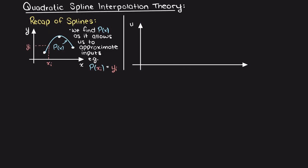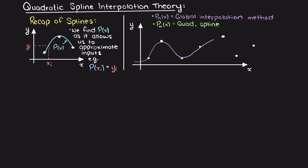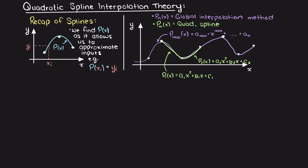Spline interpolation is known as a local interpolation method because we are only going to be using small order polynomials versus large order polynomials that commonly arise with divided difference or Lagrange polynomials. For example, if we have a very large data set of 1000 points and simply want to interpolate a few points between points 38 and 40, using divided difference interpolation will result in an extremely high order polynomial — a bit of overkill. This is where spline interpolation can shine.